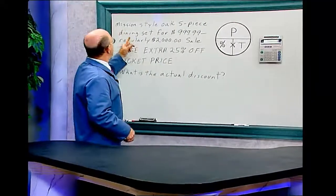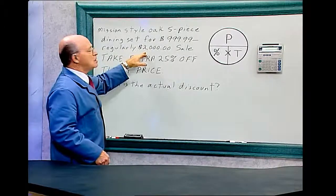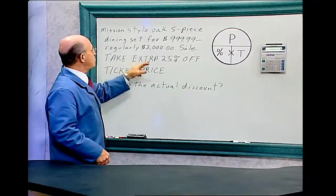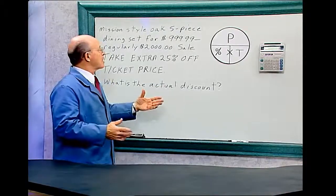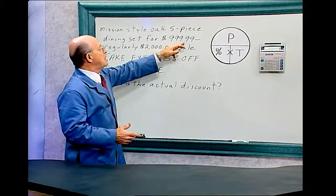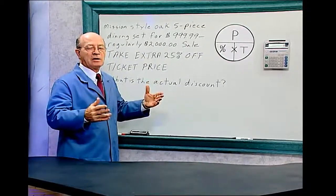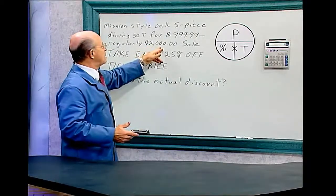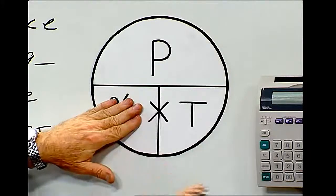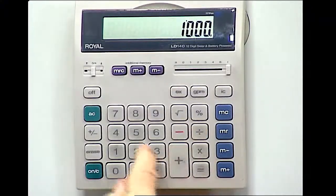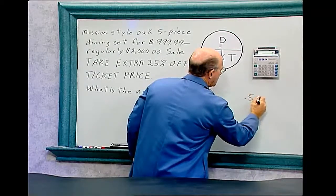Let's do the math. The mission style oak five-piece dining set for $999.99 is regularly $2,000, but it's on sale. We want to find the actual discount. It sells for $999.99, so let's add a penny and make it $1,000. Now let's find the original discount. Using a calculator: the part is $1,000 divided by the total of $2,000, which equals 0.5.